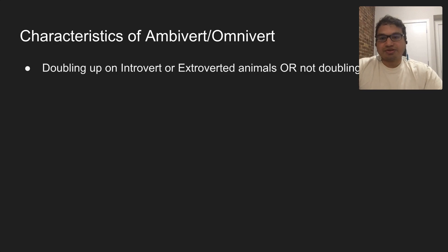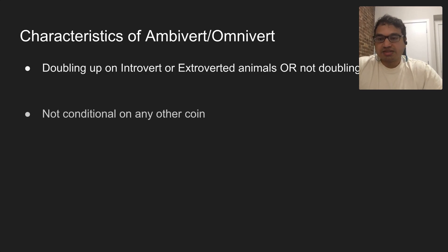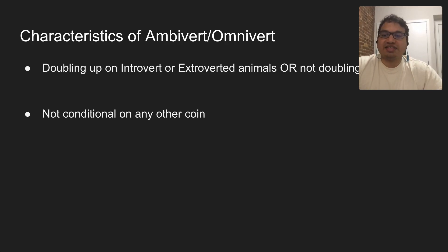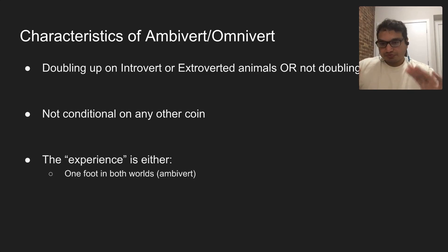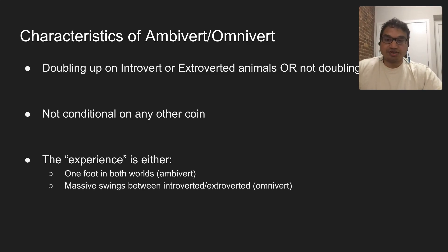The characteristics of the ambivert/omnivert coin are that omniverts are doubling up on their introverted or extroverted animals in their first two positions, while ambiverts are not. This coin is completely independent — not conditional on any other coin. It doesn't matter if someone is ambiverted and consume-first; that means they're automatically consume-play. If they're blast-first and ambiverted, it's going to be blast-sleep. The animals are technically conditional because they're byproducts. The ambivert experience is one foot in both worlds; the omnivert experience is massive swings between the introverted and extroverted world.